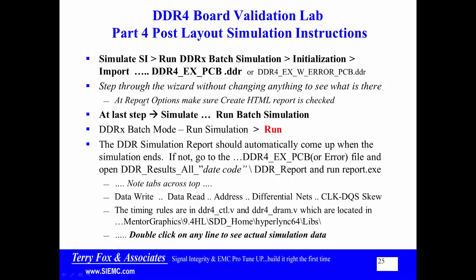At the Reports option — one of the steps as you go down through the wizard, pretty close to the bottom — make sure that you see a checkbox that says Create HTML Report. The last step is Simulate, then Run Batch Simulation. A new window will come up that says DDR Batch Mode Run Simulation. You've got to click Run or this won't fire off. The DDR Simulation Report should automatically come up because you checked Create HTML Report.